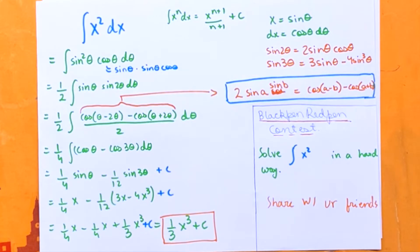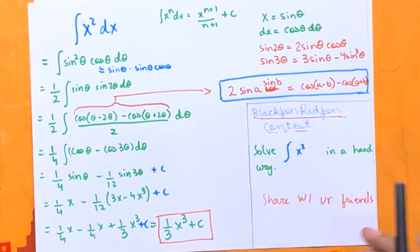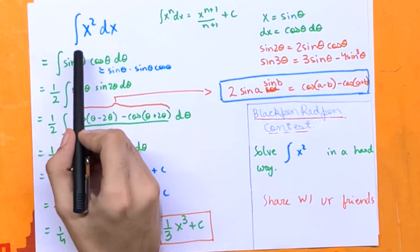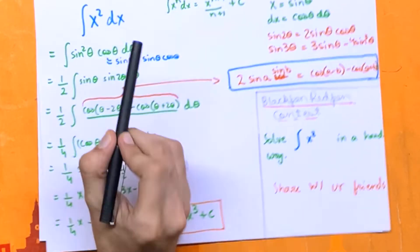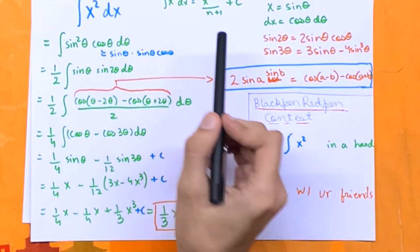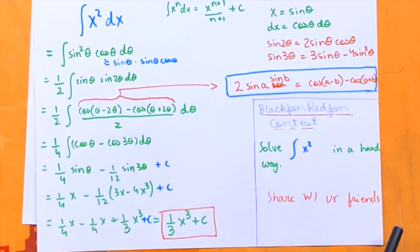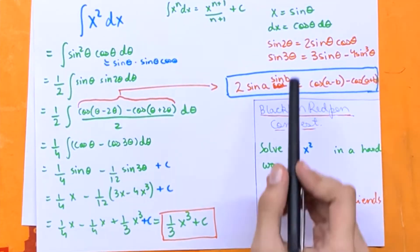Hey guys, this video is for a black pen red pen contest — I'll put all the details in the description. So we have to find the integral of x squared dx, but we can't use the power rule for integration. So we're going to solve this by substitution.